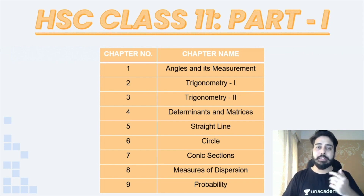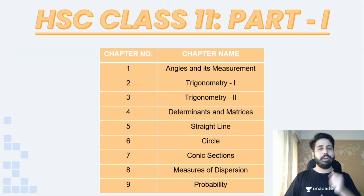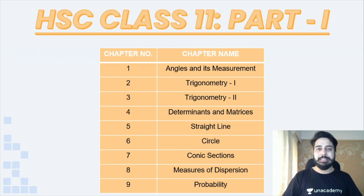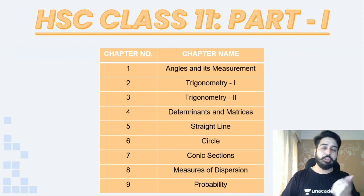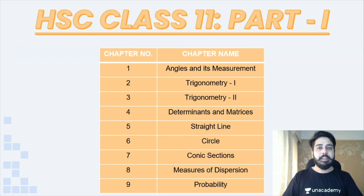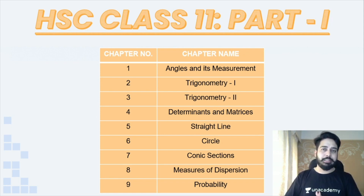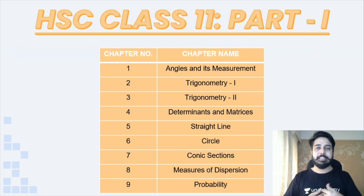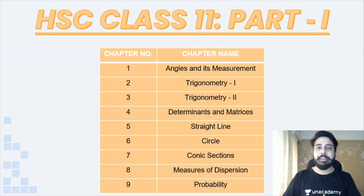Continuing with Class 11 Part 1, we have Determinants and Matrices, then Straight Lines — something you have already studied at a basic level which will be continued here. Then we have Circle and Conic Sections, and finally some statistics chapters: Measures of Dispersion and Probability. All these chapters are part of the HSC Class 11 Part 1 book.